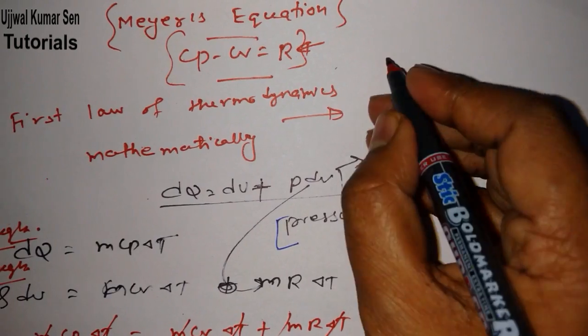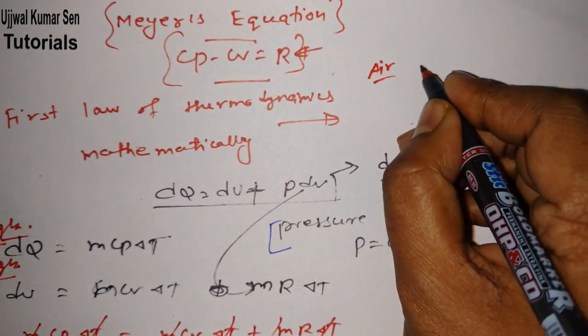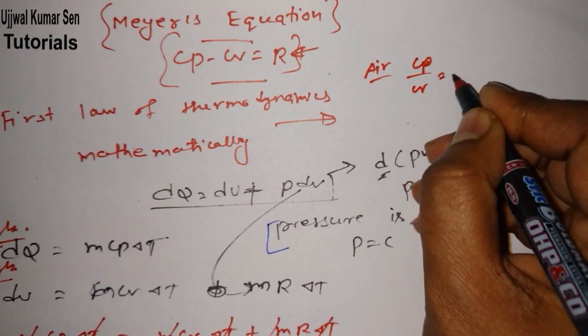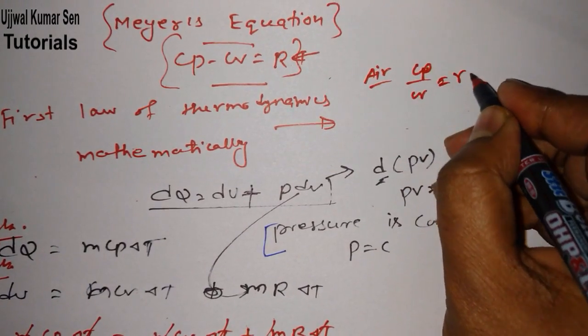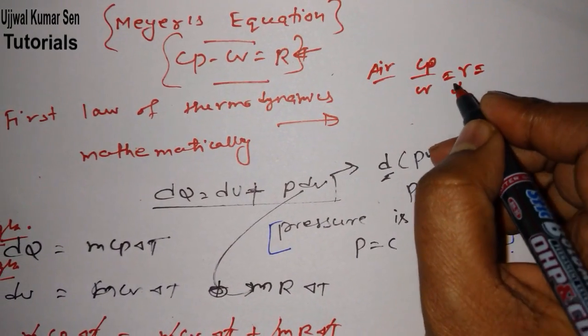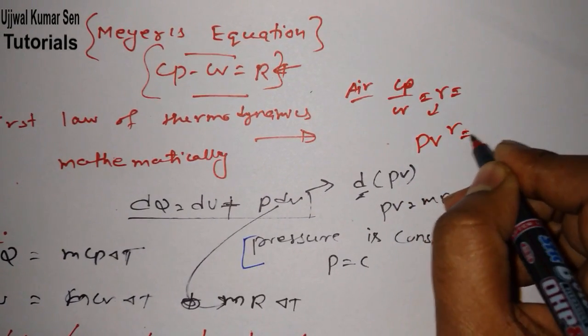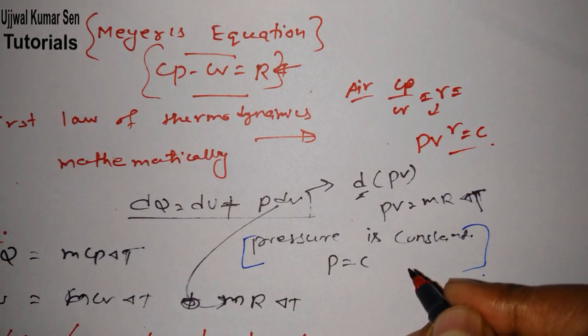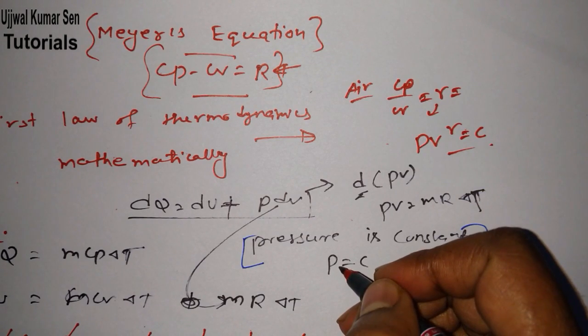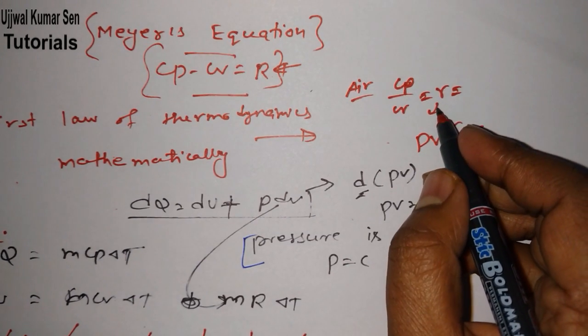One thing is here for air, what is the ratio of Cp by Cv? Cp by Cv is equal to gamma. It is known as specific heat ratio. Even in adiabatic process we use this PV gamma is equal to constant. Gamma is adiabatic index we said, and here we said this gamma is a specific heat ratio.